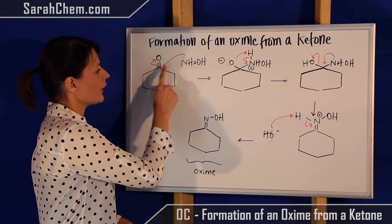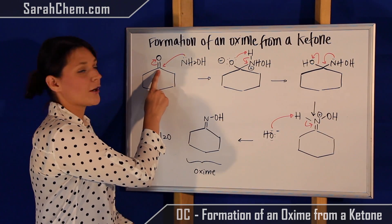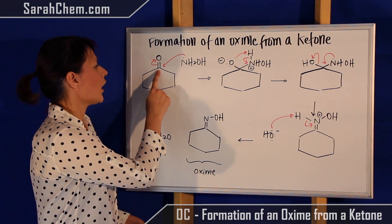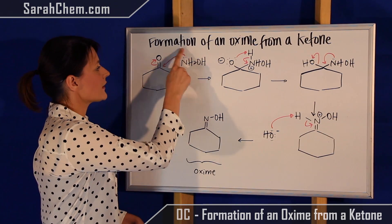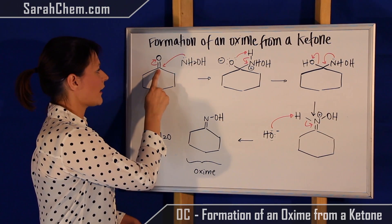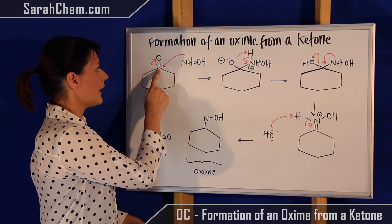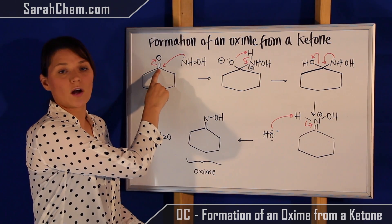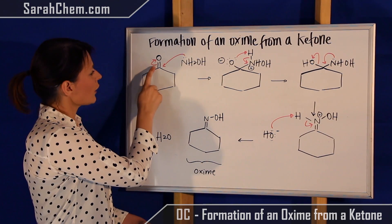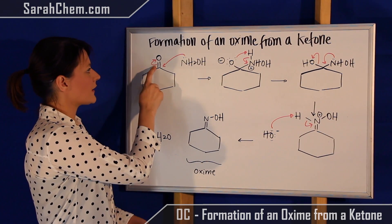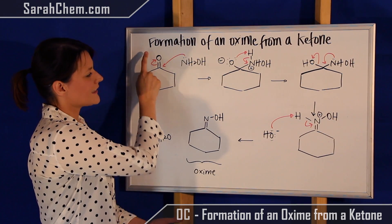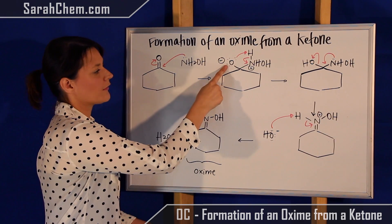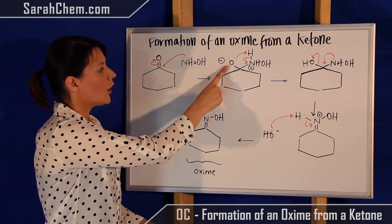So over here, this one, attracted by that partial positive on the carbon, is going to come and attack that position. Now that carbon would then have too many bonds, so that's going to cause this pi bond to kick up and dump the lone pair electrons onto this oxygen.